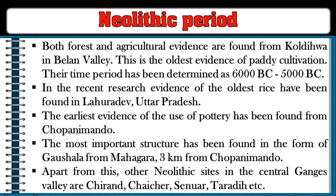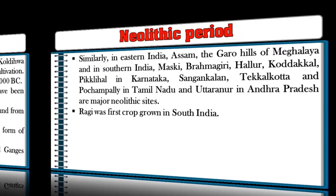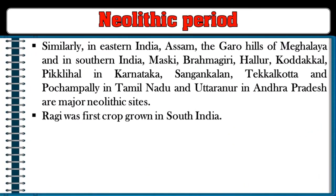Recent research has found evidence of the oldest rice at Lahuradeva in Uttar Pradesh. The earliest evidence of pottery use has been found from Chopani Mando. The most important structure found nearby is Gaushala and Mahagara, three kilometers from Chopani Mando. Other Neolithic sites in the central Ganges Valley include Chirand, Chechar, and Senuwar. In eastern India, the Garo Hills of Meghalaya, and in southern India, Maski, Brahmagiri, Hallur, Kodakkal, Piklihal in Karnataka, and Uttaranur in Andhra Pradesh are major Neolithic sites.